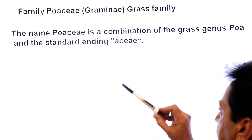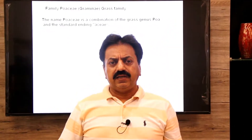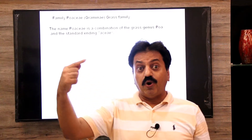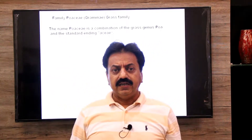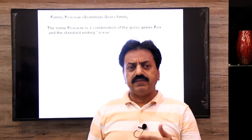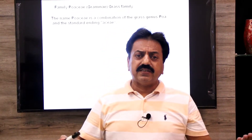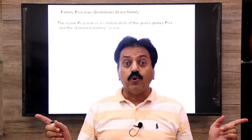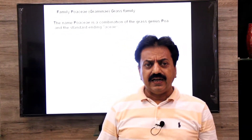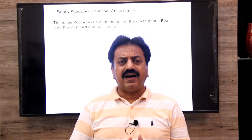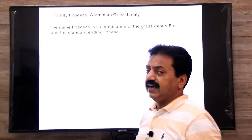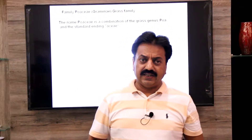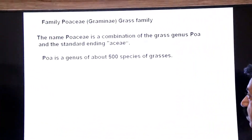When you read the nomenclature of any family, a main genus is taken first — for example, the genus Poa — and then '-aceae' is added at the end, giving Poaceae. Similarly, when naming enzymes, you first take the name of a substrate and add '-ase' at the end, like sucrase, maltase. In the same way, when families are named, a genus name is taken and '-aceae' is added: Rosa → Rosaceae, Solanum → Solanaceae, Poa → Poaceae.